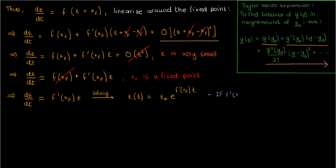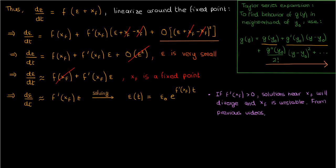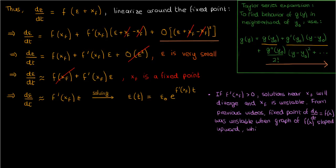Now, if f'(x_f) is greater than 0, then epsilon will increase with time since the power on the exponential will be positive. So in regions close to the fixed point x_f, the solutions will tend to diverge, and as a result, when f'(x_f) > 0, the fixed point x_f will be unstable. This agrees with what we found in previous videos using the graphical method, where fixed points of dx/dt = f(x) were unstable whenever the graph of f(x) sloped upward at the fixed point.